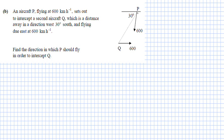Plane P is traveling at 600 kilometers an hour, plane Q is traveling at 600 kilometers per hour. When they intersect they have been traveling for the same time at the same speed, so they've traveled the same distance.